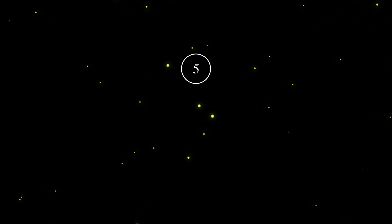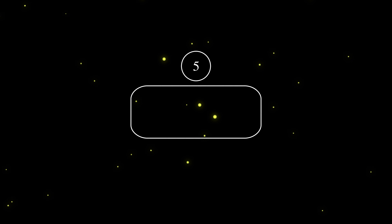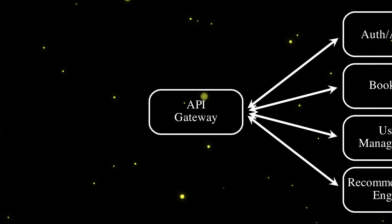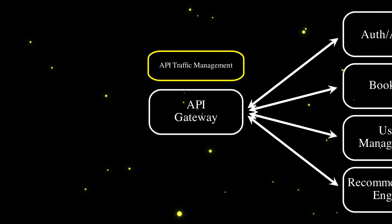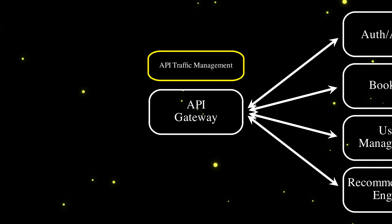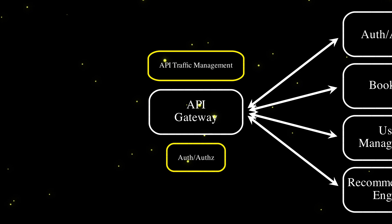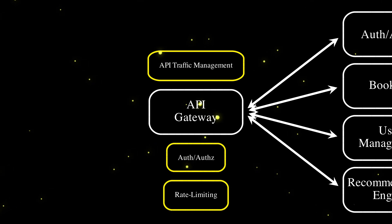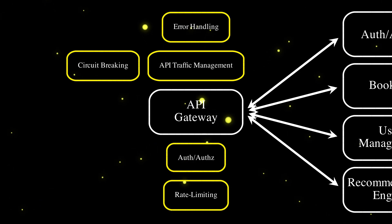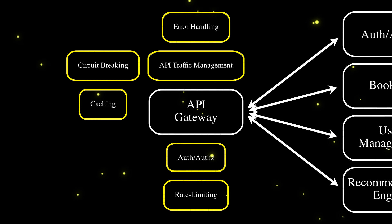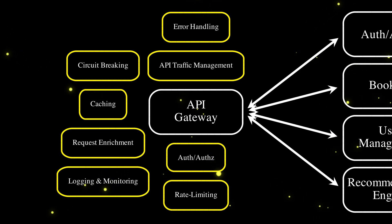Number five: an API Gateway. An API Gateway is the entry point in any microservice architecture, and by design it has many roles. It does API traffic management — basically deciding to route a request to a particular microservice based on different aspects of the request — authentication and authorization, rate limiting, error handling and circuit breaking. It also does caching to speed up read performance, can enrich the request with extra information, and handles logging and monitoring, among many others.